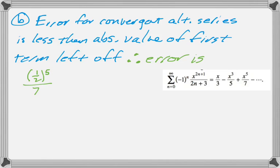So the error is less than 1 half to the 5th over 7. And that came from, we're looking at g of x. That's the first term we left off, x to the 5th over 7. So this will be 1 7th. And then 1 half to the 5th is 1 over 32, which you'd probably have plenty of time to work out if you don't just know it. And then that's definitely less than 1 over 200, and that's what we were asked to show. So there you go. That's part B.